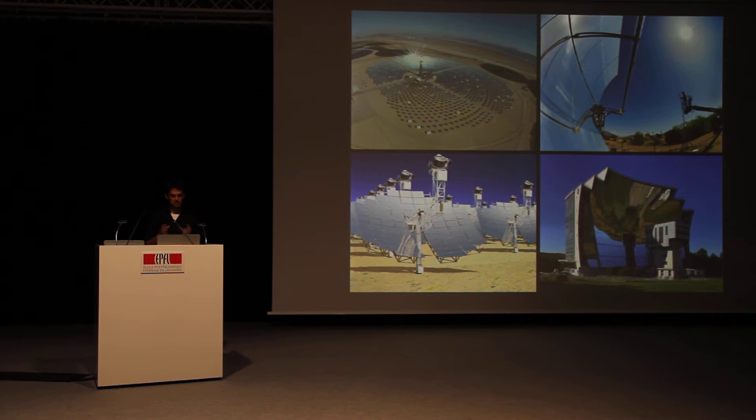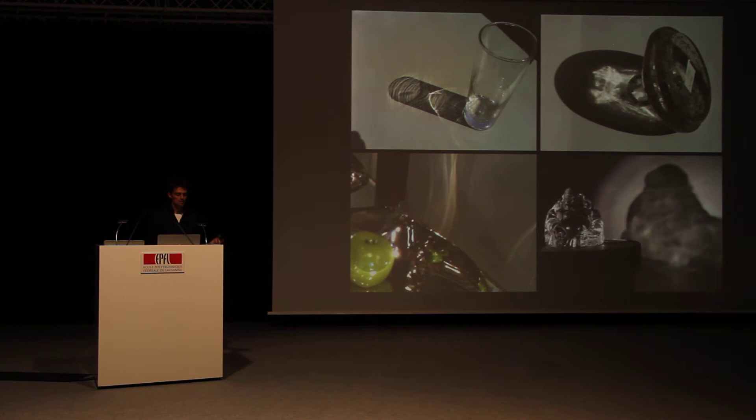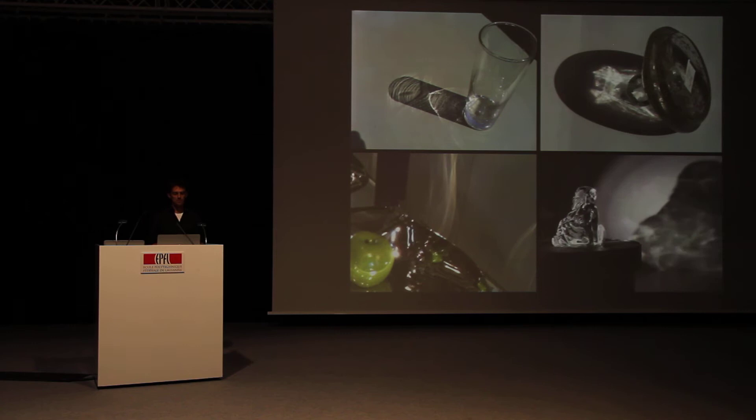But caustics are more than just focusing light to a point. Much more interesting and actually very beautiful light patterns can be created, even from rather simple objects — for example, a drinking glass or a fruit bowl. Whenever light reflects or refracts off some curved object, we can observe these seemingly random, chaotic patterns of light.